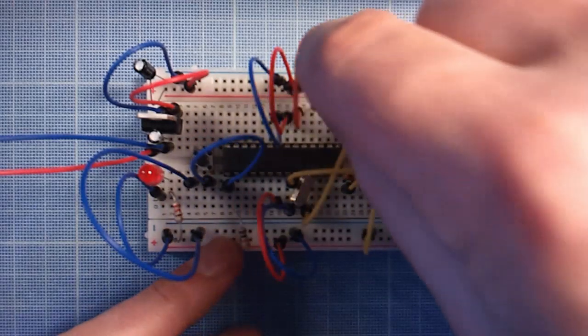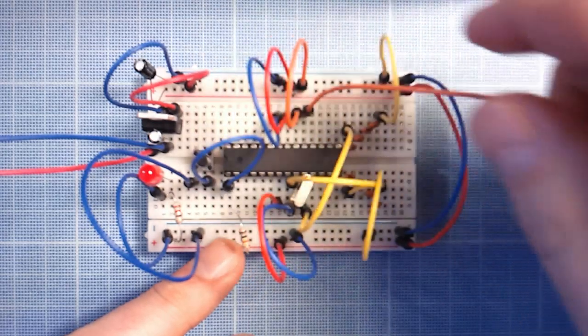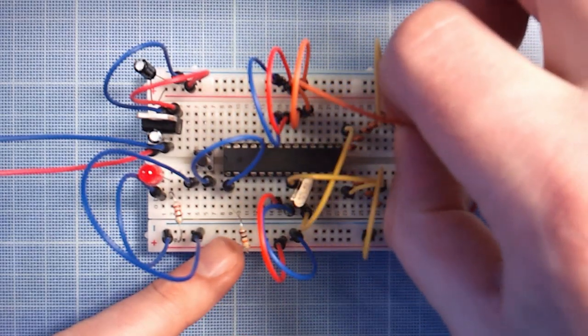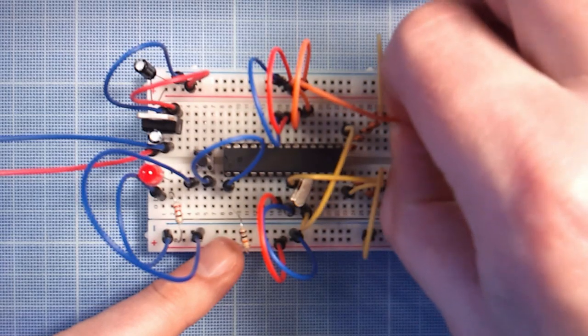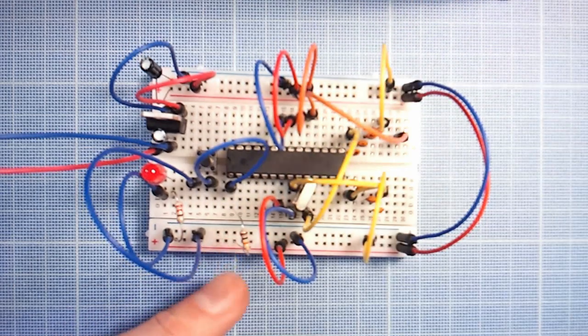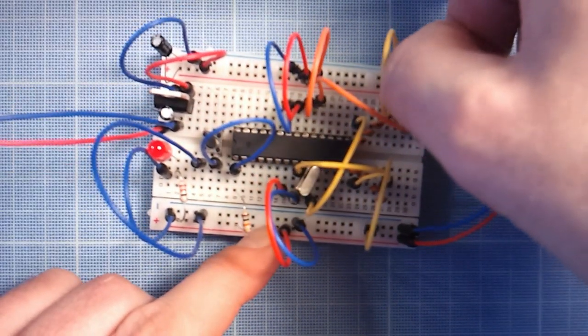Connect one more jumper wire from pin 19 to one of three lines on the breadboard. Connect a 220 ohm resistor between ground and the line adjacent to the previous one.